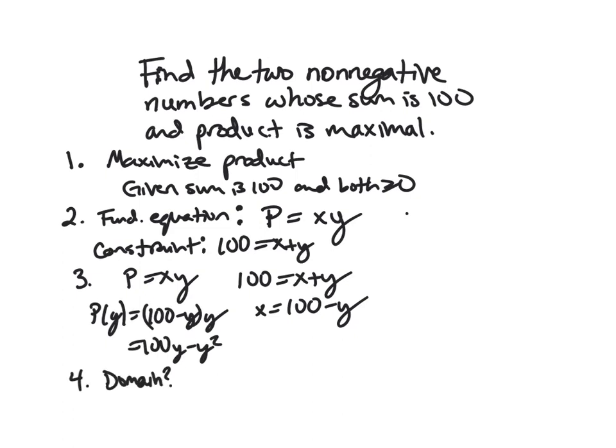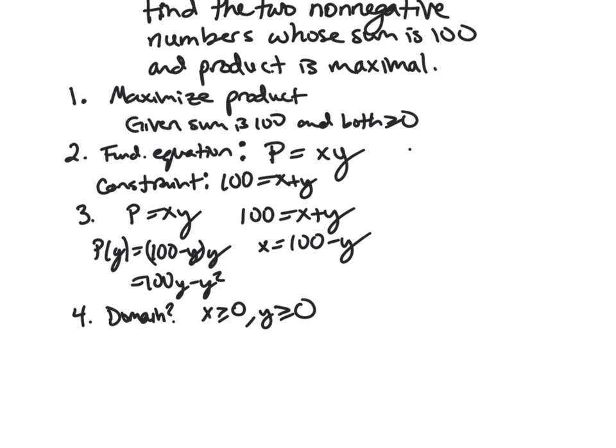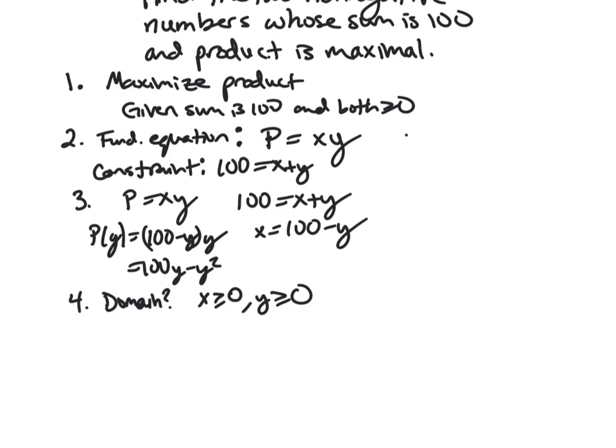So next, before we figure out how to maximize this, we need to figure out our domain. So we kind of made mention of this earlier, that x is greater than or equal to zero and y must be greater than or equal to zero. These are the kind of real-world constraints that we're put up against because if you look at 100y minus y squared, you can plug in anything for y. But we know that we can only plug in non-negative things.